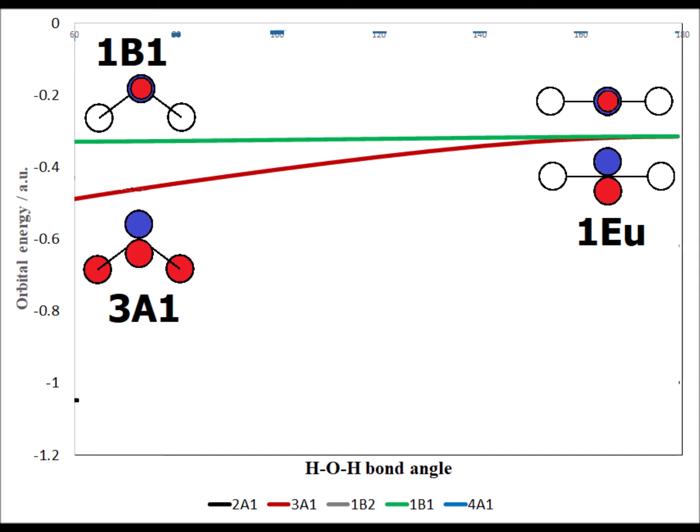3A1 and 1B1 have different energies when the molecule is bent, but their energies converge to the same value when the molecule becomes linear. We say that the orbitals are degenerate. It is possible for two orbitals to have the same energy by accident, but often it is a direct consequence of geometry.